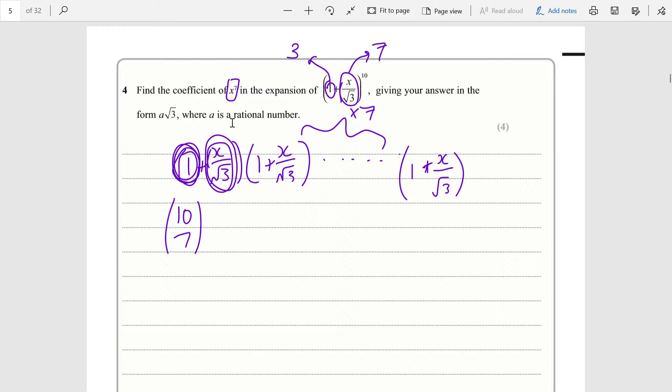You may see this represented in notation as 10 choose 7, because you have 10 brackets and you're choosing 7 of them from which to take the x over root 3. This equals 10 factorial divided by 7 factorial multiplied by 3 factorial.